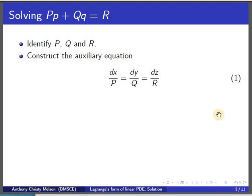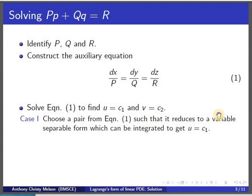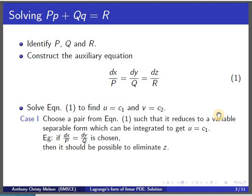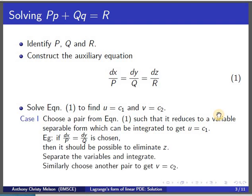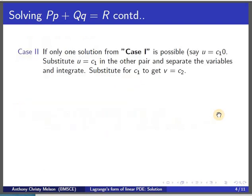To solve equation 1 there are three possible cases. In the first case, if we can choose a pair such that it reduces to a variable separable form, we can integrate that to get the solution u equal to c1. For example, if we choose dx/P equal to dy/Q, we should be able to eliminate z. If not, then choose a pair where the third variable can be eliminated. Similarly, we can choose another pair to get v equal to c2.